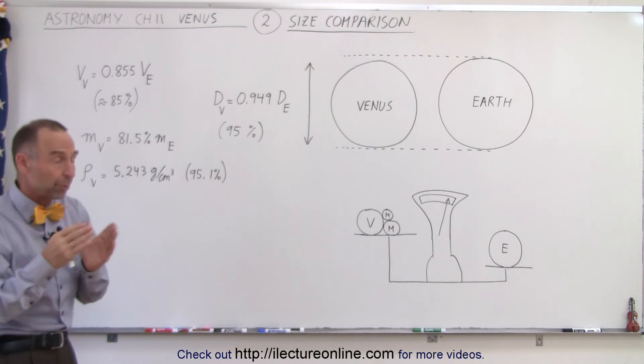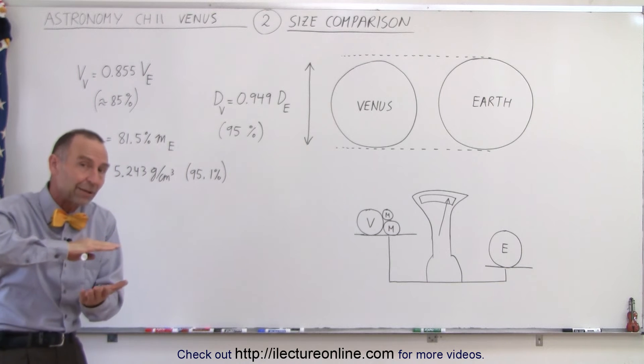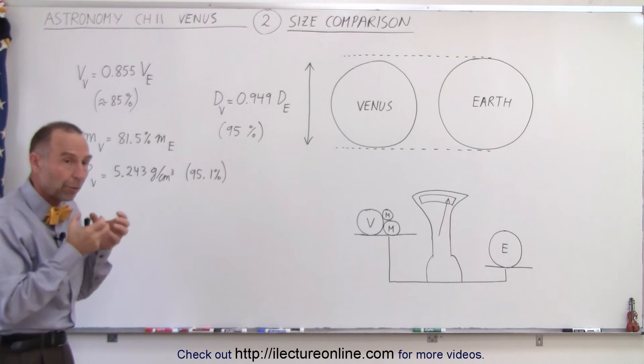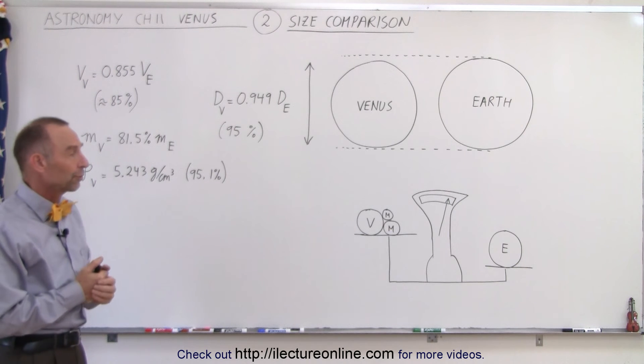And we know that the density must be greater in the Earth even with the same proportions because Earth is a little bit bigger and therefore compresses everything a little bit more at the core and therefore there's more pressure and greater density for the same material at the core of the Earth.